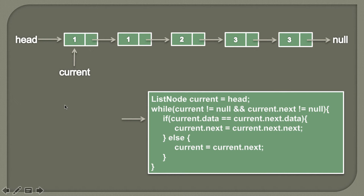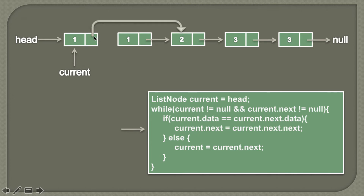The if block will be executed. In order to remove this duplicate, we assign current.next.next to current.next. Currently, current.next points to the second node, so we break that pointer and assign it to current.next.next. As this node has no reference, it will be garbage collected.